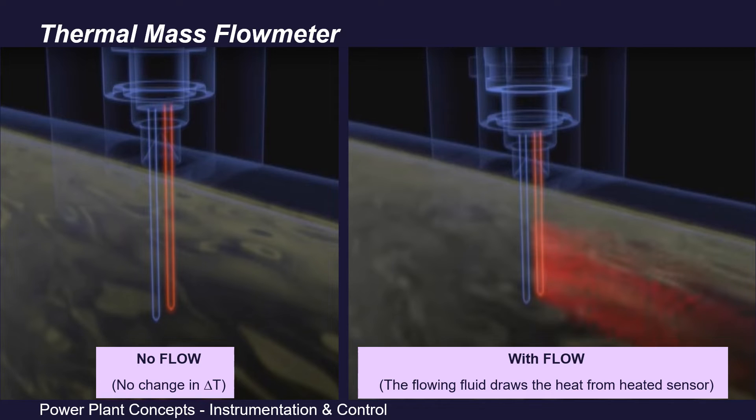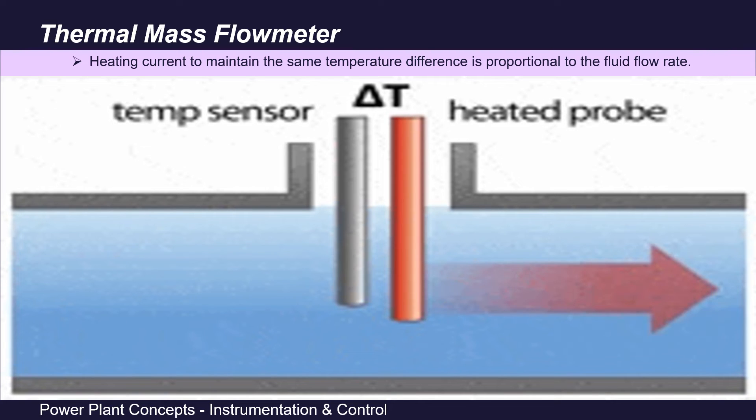we already know by King's law that this cooling effect is proportional to the fluid flow rate. Thus, we can say this heating current is also proportional to the fluid flow rate. The greater is the fluid flow velocity, the greater will be the heat drawn, and the greater will be the heating current required to maintain the same temperature difference. Friends, I hope this funda is clear.